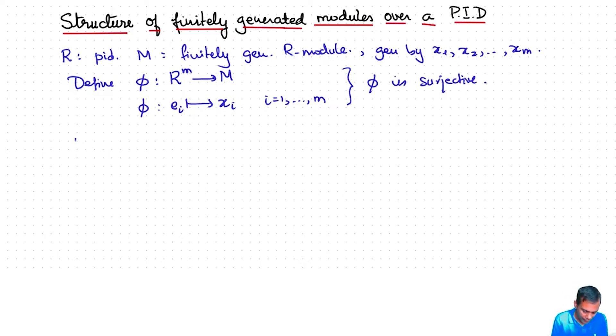Therefore M is isomorphic to R^m mod kernel φ. Now kernel φ is a submodule of R^m. Since R is a principal ideal domain, it's also a Noetherian ring, and therefore kernel φ, being a submodule of a finitely generated R-module, is again finitely generated.